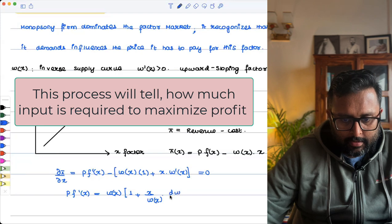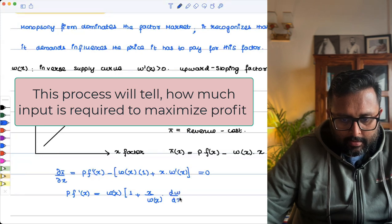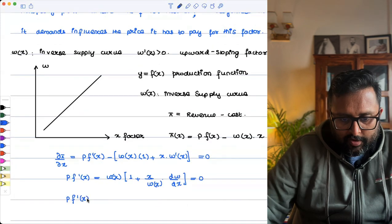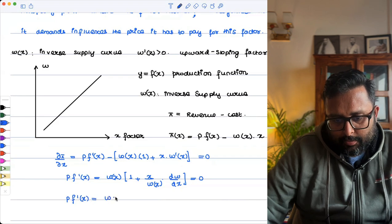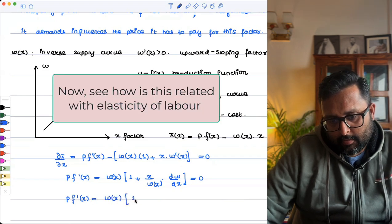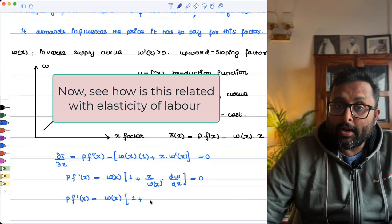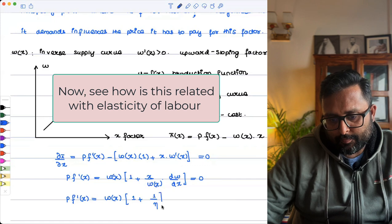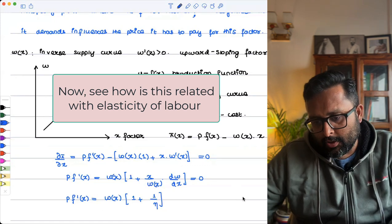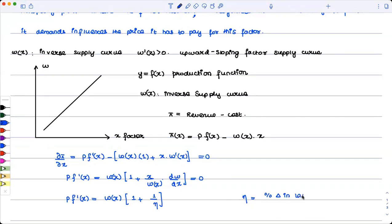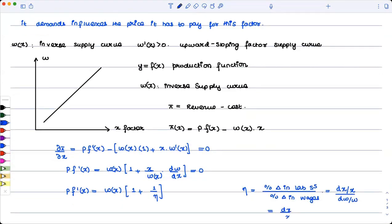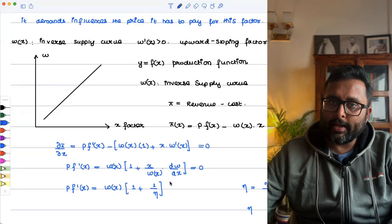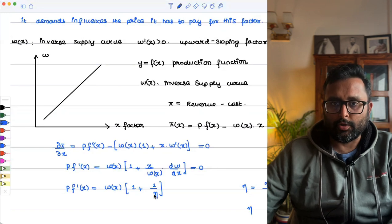What is W dash X? DW by DX. We have P F dash X is equal to WX times 1 plus 1 upon elasticity of labor. Why? Because what is elasticity of labor? Elasticity of labor supply is percentage change in labor supply upon percentage change in wages, which is DX by DW into W by X. And so this is X upon W into DW by DX. So that is 1 upon elasticity of labor.